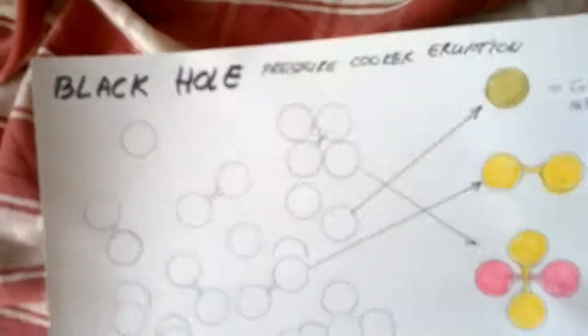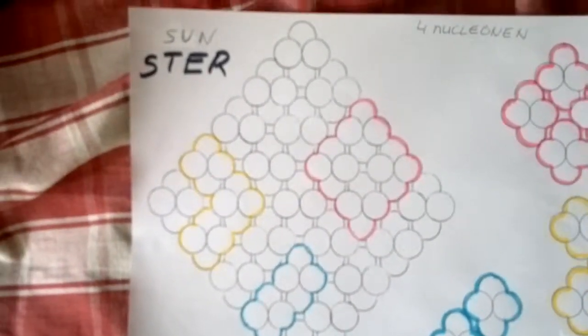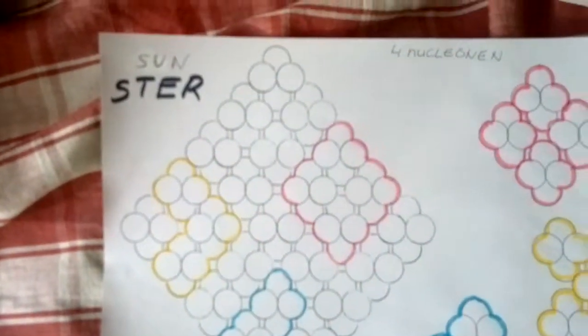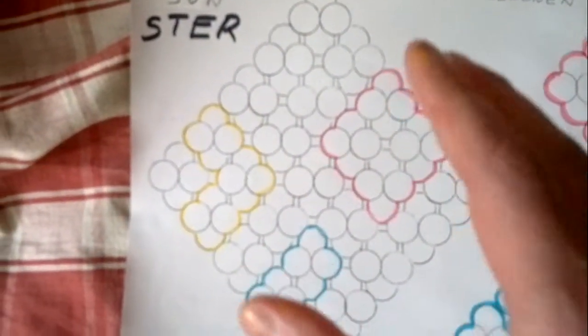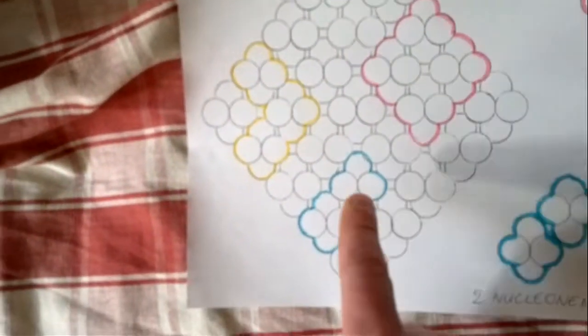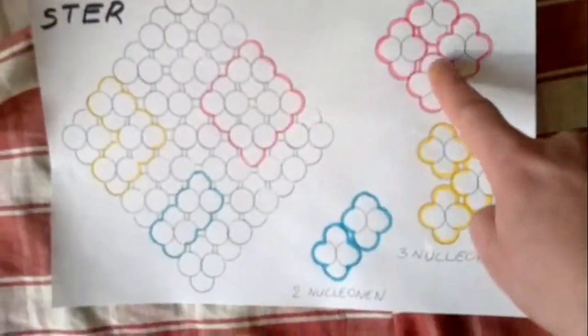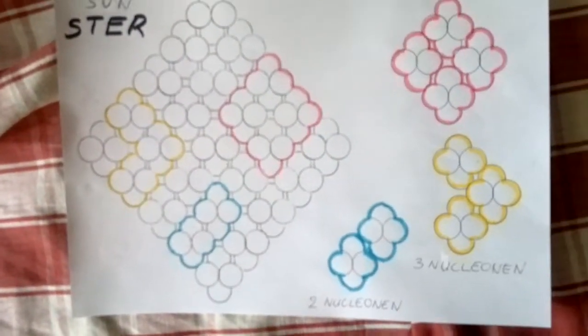Proton sticking out a little, neutron all tight together. So you got the black hole pressure cooker, these come out and they stack in the sun or stars like this. It's the most efficient way to stack them in a small volume.